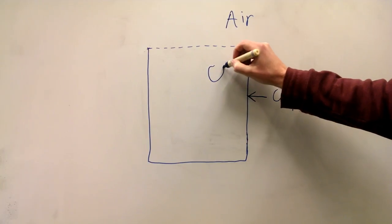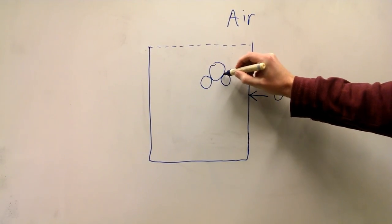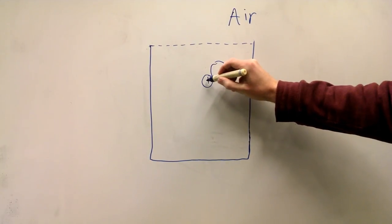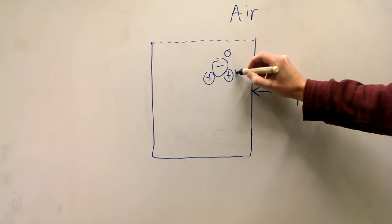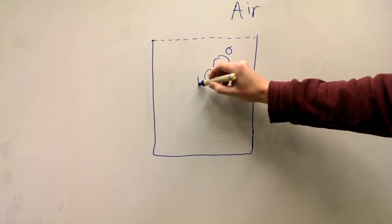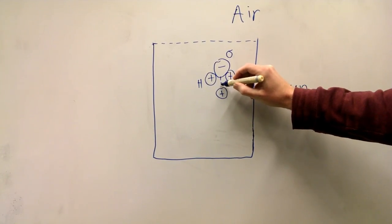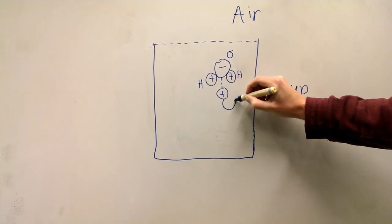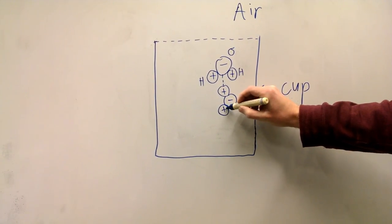A water molecule consists of an oxygen atom and two hydrogen atoms. The oxygen is slightly negatively charged and the hydrogen is slightly positive. In a liquid the water molecules will arrange themselves so that the hydrogen of one water molecule will form a weak bond with the oxygen of another. These bonds are called hydrogen bonds.